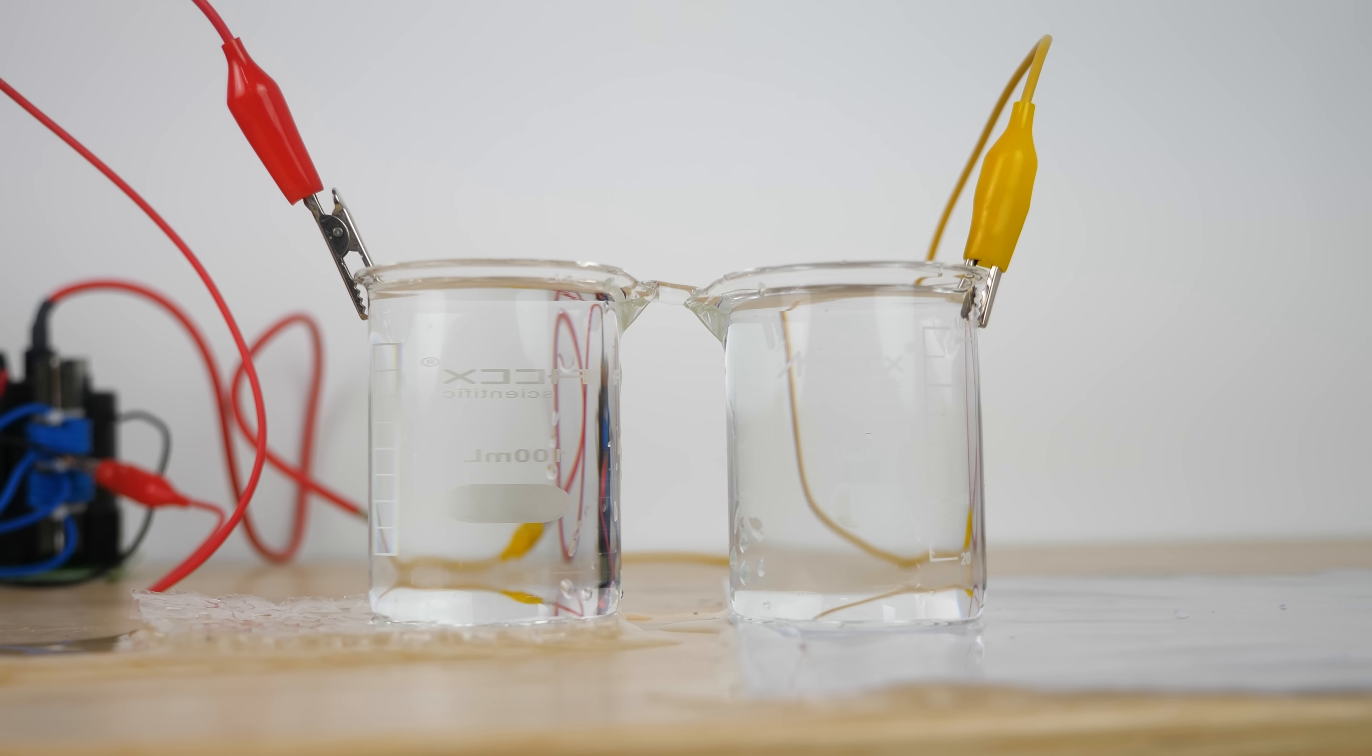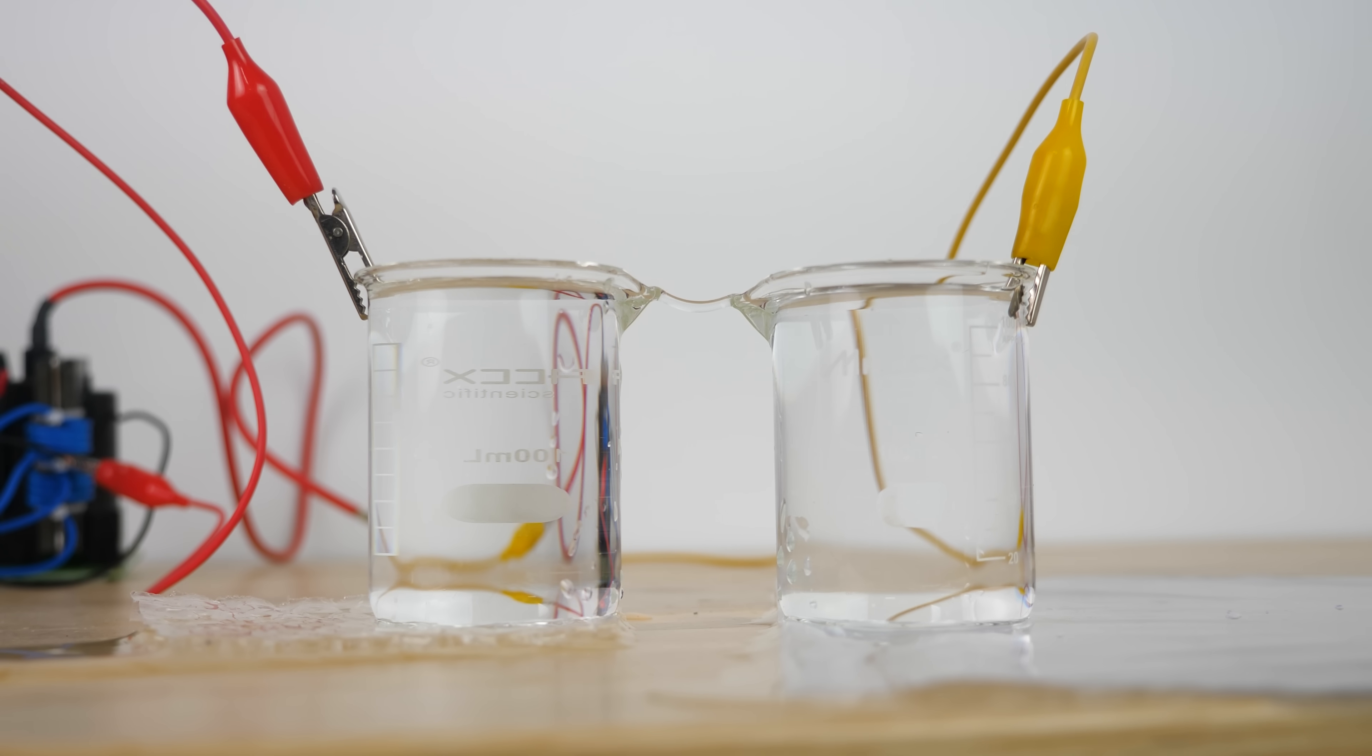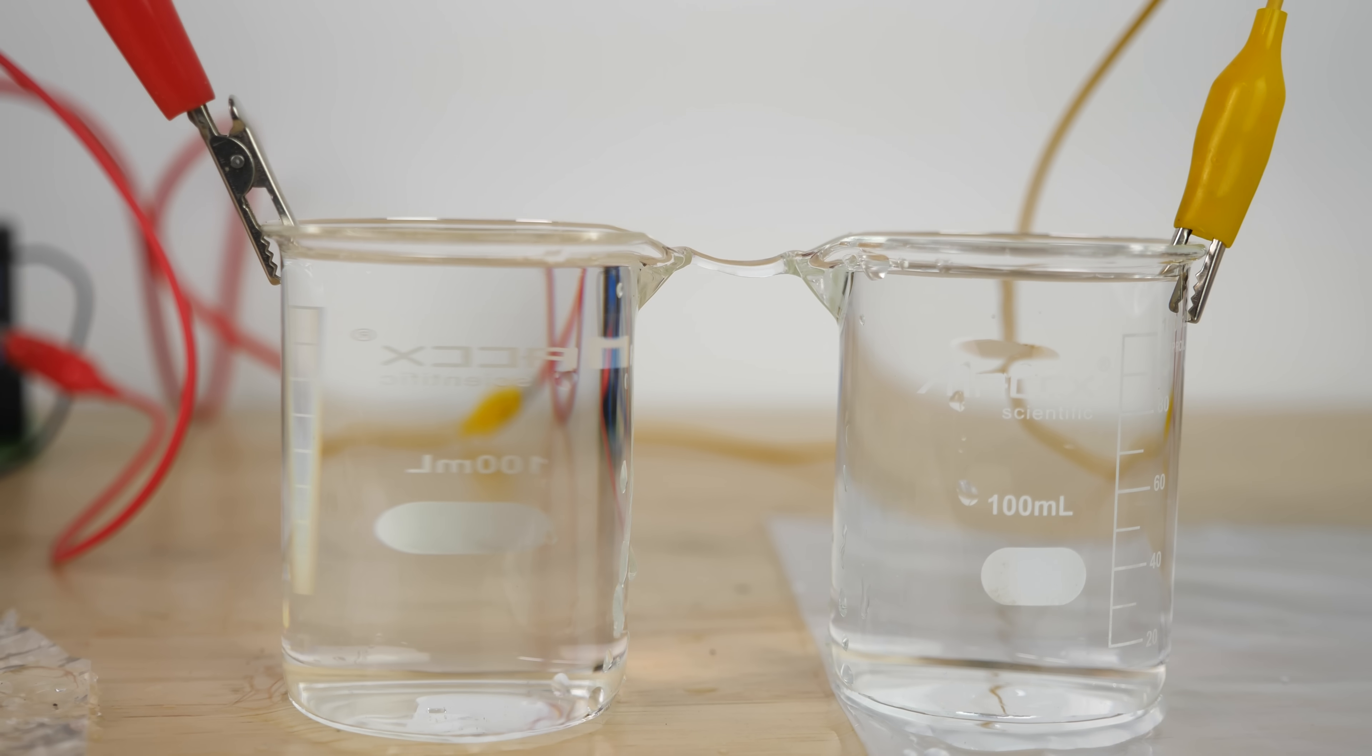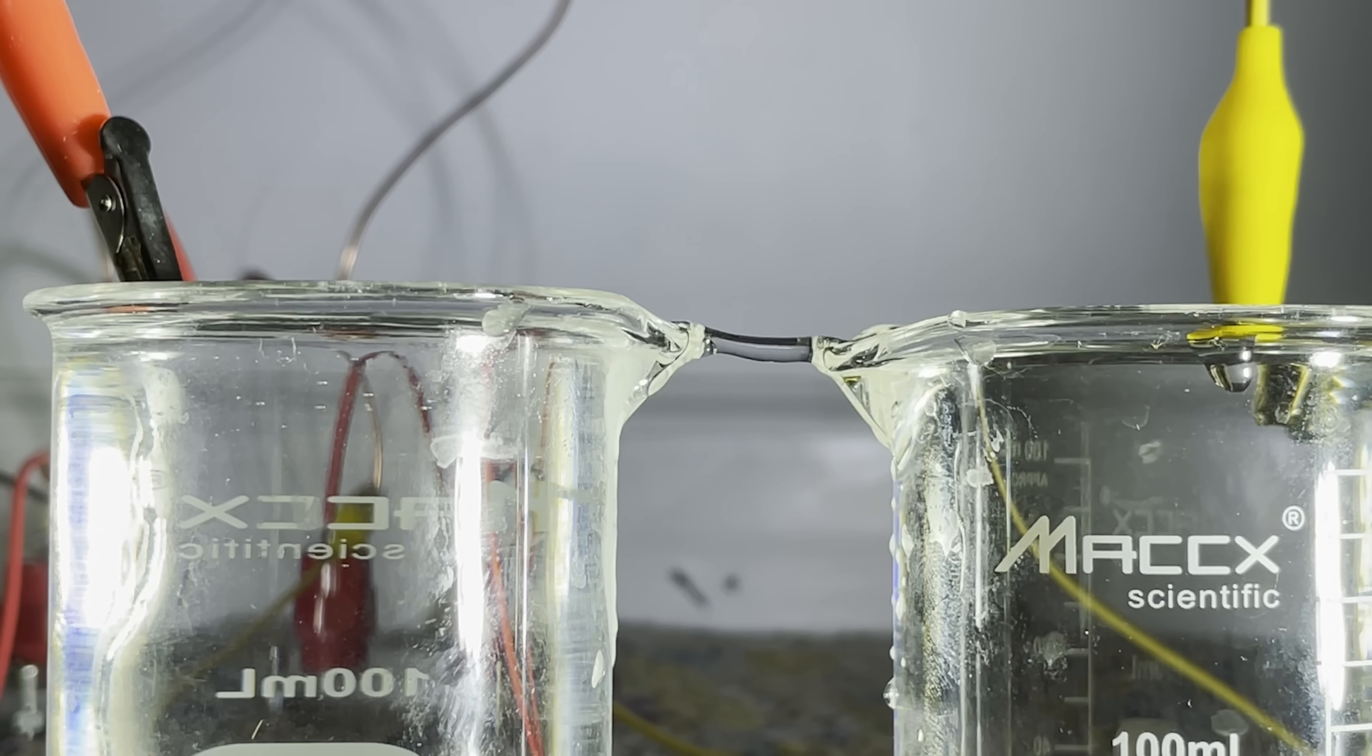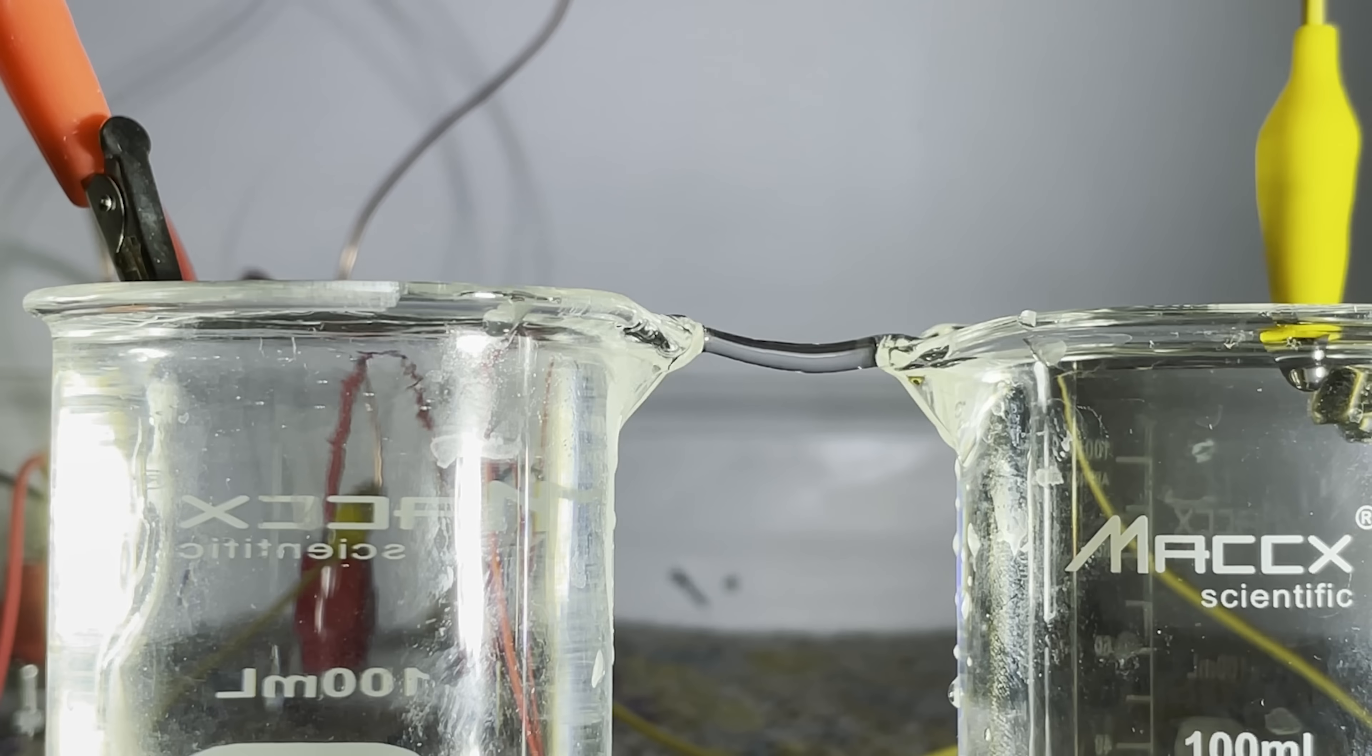There's a stable zone that forms the best bridges. If you have your current too high, then the bridge gets too big and heavy and it sags down, and it drips water out and drains the beakers. And then if it gets too thin, then the surface tension just takes over and the bridge collapses. Also, if you have too many ions in the water, then the bridges don't form very well at all. And also, the water even heats up and boils inside the bridge. You can see the boiling water like this.